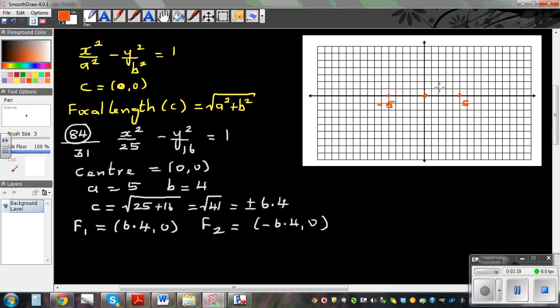What is b? You go 4 vertically: 1, 2, 3, 4. And 1, 2, 3, 4. And you go down 4: 1, 2, 3, 4. So this is negative 4.